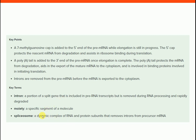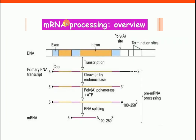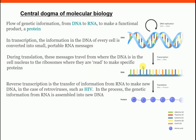The spliceosome is a dynamic complex consisting of RNA and protein that removes introns from precursor mRNA. To sum up, the central dogma of molecular biology explains the flow of genetic information from DNA to RNA to protein.